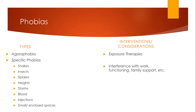There are also a lot of specific phobias. The most common are phobias to animals like snakes, insects, and spiders, phobias to heights, phobias to storms, phobias to blood or injections, STDs, communicable diseases, and things like that. Claustrophobia is the specific phobia related to small and enclosed spaces.